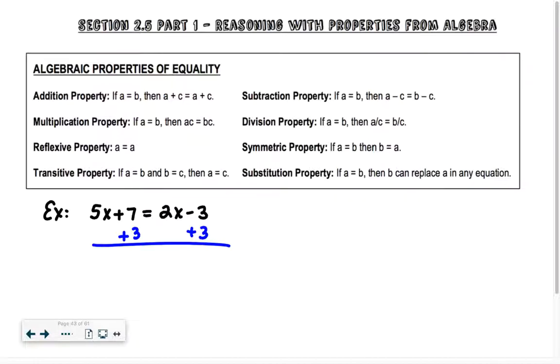That would be what we would call the addition property of equality. Does that make sense? Same idea with subtraction property of equality. So if I start out with A equals C and I subtract C from both sides, that's the subtraction property of equality.